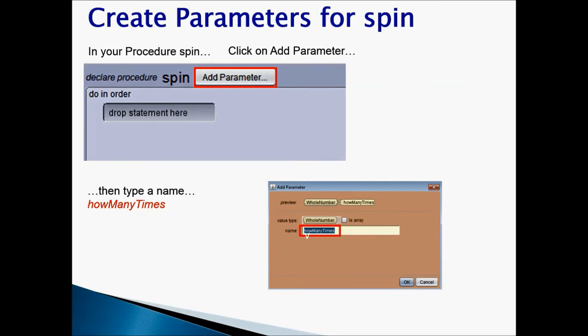The name of the parameter must always make sense. What action it is doing, what is it asking. And then you would select the type. I'm going to select whole number because I need it to spin one time, two times, three times. And once you're done selecting your value type, press OK.